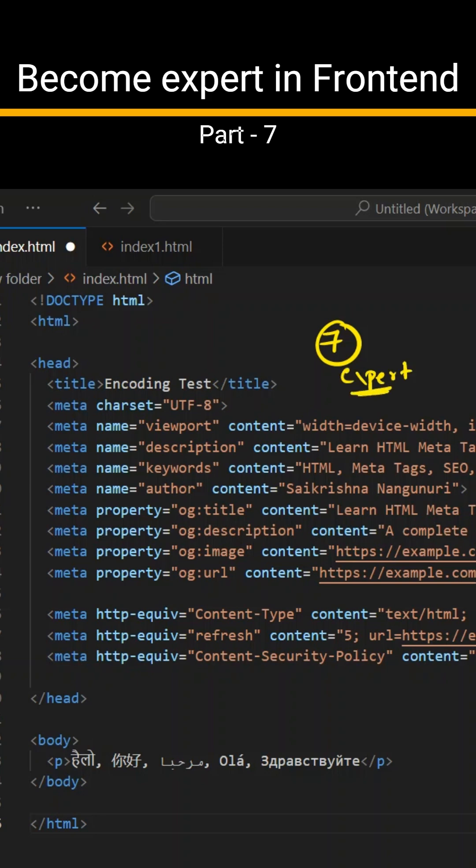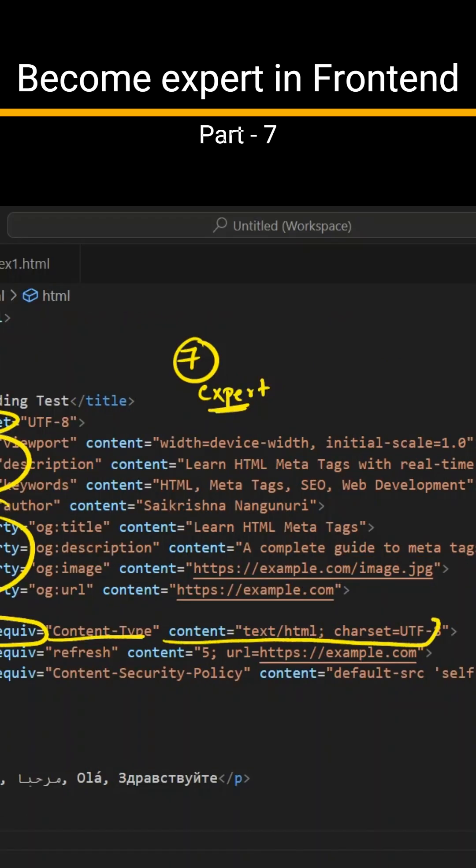In our previous tutorials, we have seen what the charset attribute is, what these name attributes are, and what these property attributes are in a practical way. Let us see what this HTTP equivalent is, what this content type is, and why this content HTML or text or UTF-8 is required here. Let us see everything in detail and in-depth. Let us try to understand this with a simple example.